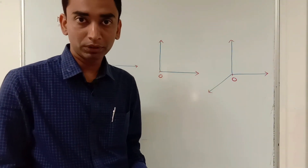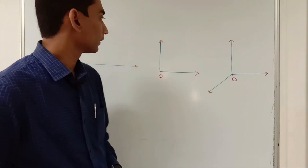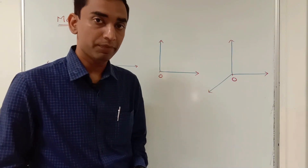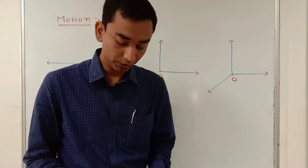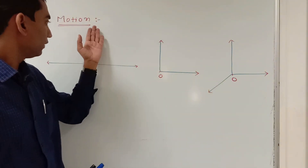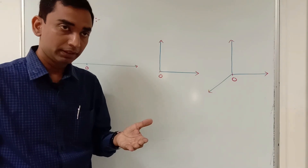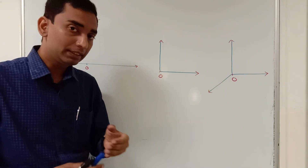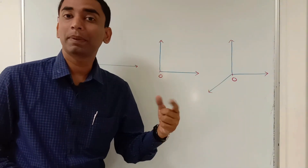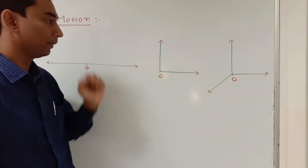Let's talk about the motion and types of motion. Let's recapitulate the definition of motion: if a body changes its position with respect to a reference object with respect to time, then the body is said to be in motion.